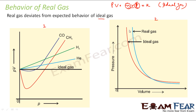PV = nRT is the ideal gas equation. If I put temperature and number of moles constant, the right-hand side becomes constant. That means P × V is constant. So if I plot PV against any other parameter, let's suppose P, it will be a straight line because it is an ideal gas.